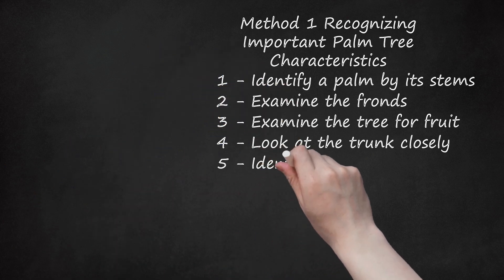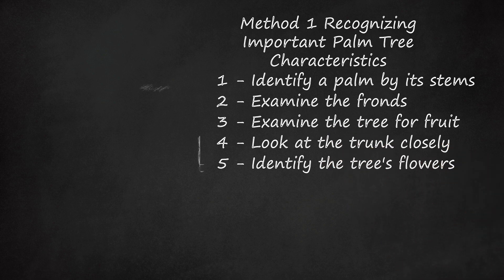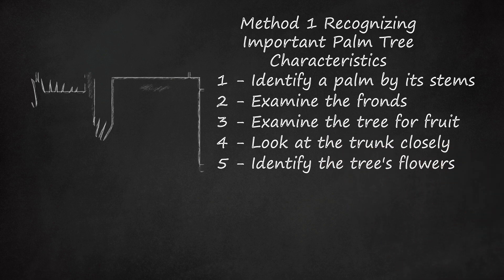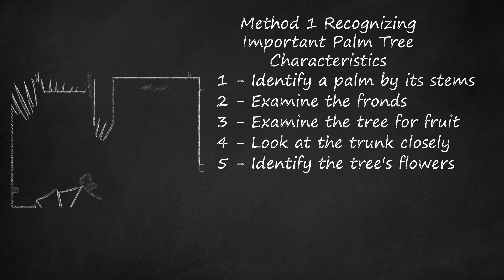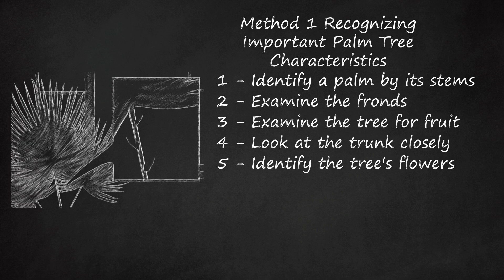Fifth, identify the tree's flowers. Palm trees are distinguished by very discrete flowers that are usually yellowish-green to light green, and generally grow in clusters along the stems. They are generally not very vibrant or flashy.